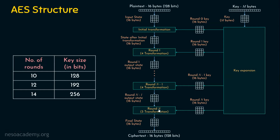Round one to round n need round one through round n keys, all scheduled by the key scheduling algorithm, which takes the key of m bytes. The key size m and the number of rounds n have a relationship: m can be 128, 192, or 256 bits, and n can be 10, 12, or 14 respectively. For every round, a 16-byte or 128-bit round key is used. All round keys are of constant 128-bit size regardless of the input key size. Always remember, the last round has only three transformations, while the remaining rounds have four transformations each.